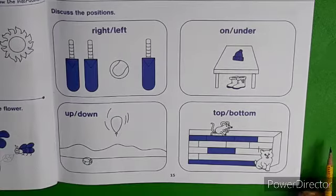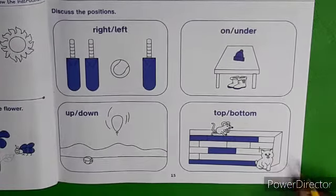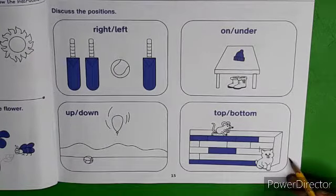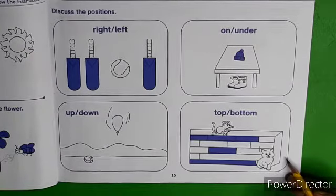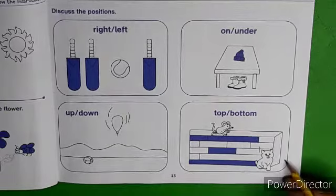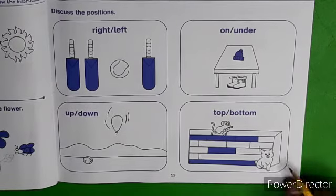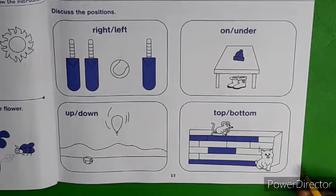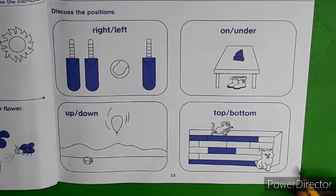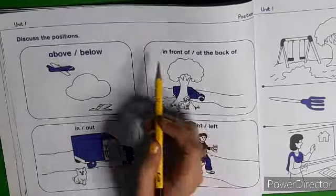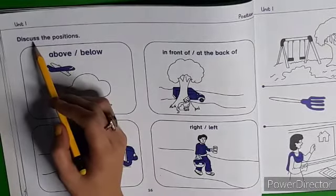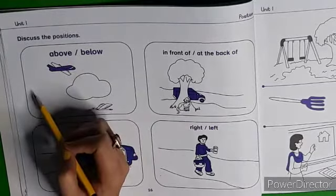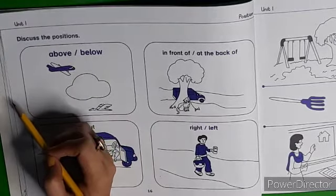So dear parents, جتنے concepts آج ہمنے پڑھے ہیں آپ نے مختلف objects سے بچوں کو یہ اچھی طرح clear کروانے ہیں. کوشش کریں کہ بچہ پورا جملہ بولے. Now come to the next page. Let's start — Discuss the position — on this page also we will discuss positions.